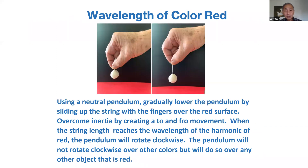Let's take the example of determining string length for the color red. You hold the pendulum next to the weight and gradually slide your fingers up on the string, getting the pendulum moving in a to-and-fro motion. At the string length that is in resonance with the color red, the pendulum will rotate clockwise. So now you would have the wavelength for the color red.